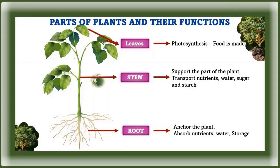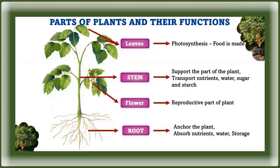Leaves are the part of the plant where photosynthesis usually occurs — the food for the plant is made here. Flowers are the reproductive parts of plants. They often have showy petals and fragrance to attract pollinators. After flowers are pollinated and fertilized, they produce seeds in the ovary of the plant.